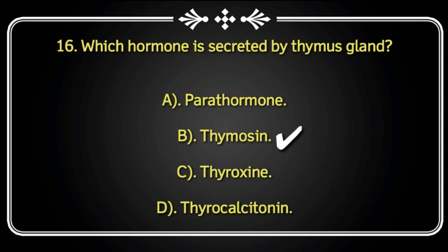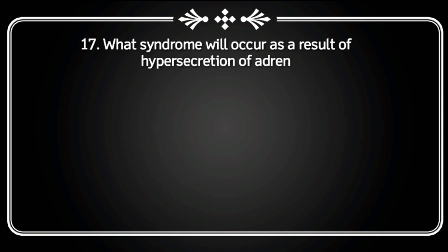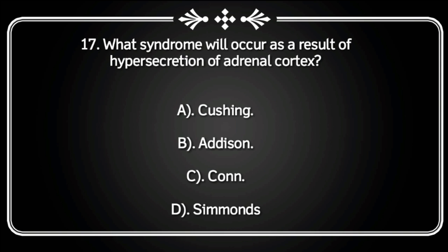Next question: What syndrome will occur as a result of hypersecretion of the adrenal cortex? Cushing, Addison, Conn, or Simmonds? Correct answer is Cushing syndrome.